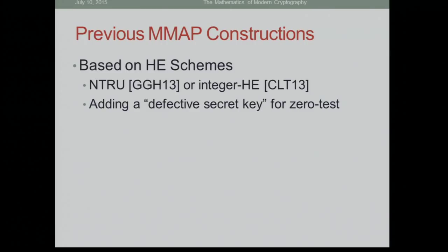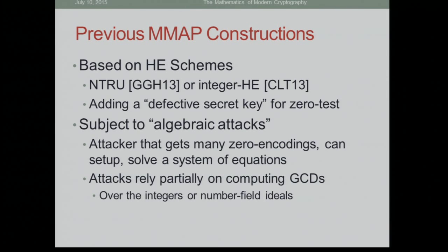The previous constructions of multilinear maps are all based on some homomorphic encryption schemes. On a very high level, what they do is give you a defective version of the secret key that's good enough for testing if something is zero but not good enough for decryption. There's one based on NTRU due to Garg, Gentry, and myself, and one based on integer homomorphic encryption due to Coron, Lapointe, and Tiboci. In some sense, they're very algebraic, and that gives you structure that you can exploit when you attack them.